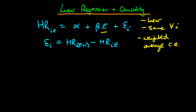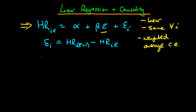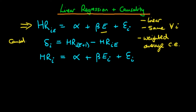From the potential outcome model, we can derive the model we actually observe. The observed resting heart rate of individual I equals alpha plus beta times E_I plus epsilon_I. Because the top model is assumed causal and this bottom model is simply derived from it by plugging in E_I, the bottom model also has a causal interpretation.